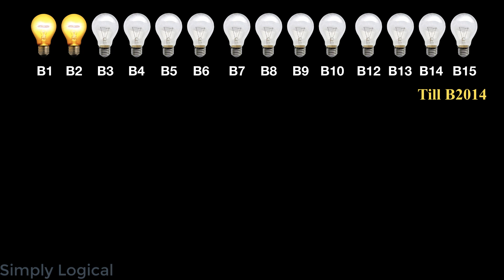For convenience, label the 2014 bulbs from B1 to B2014. The most important point is that the positions of the bulbs in the on state are not given. So we assume they are adjacent, and we start naming the bulbs from there. B1 and B2 will be in the on state, and from B3 to B2014 they will be in the off state.